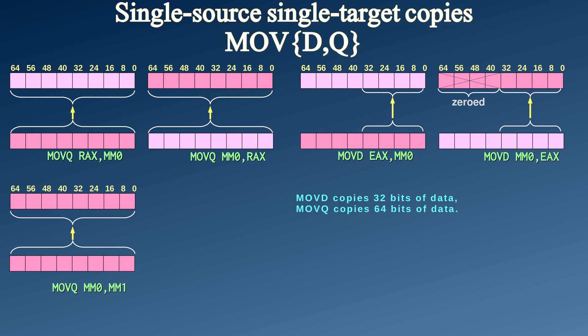However, when they added the MMX extension, they kind of forgot about this principle. When MMX registers are in question, you would use the MOVD and MOVQ instructions instead. Why? I have no idea. The names are logical though — D stands for double-word and Q stands for quad-word. So MOVD copies 32 bits, and MOVQ copies 64 bits.